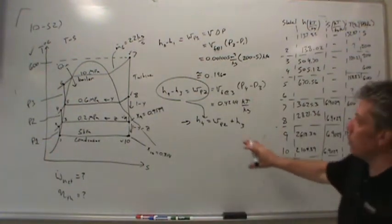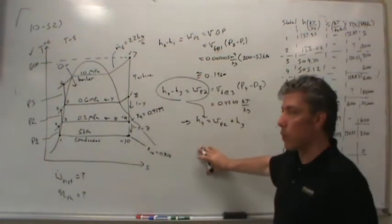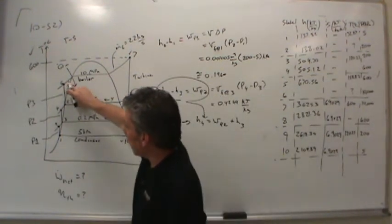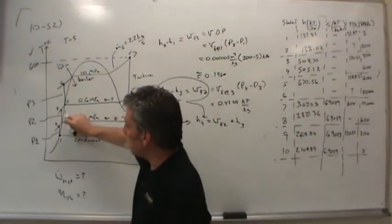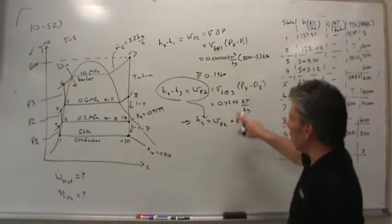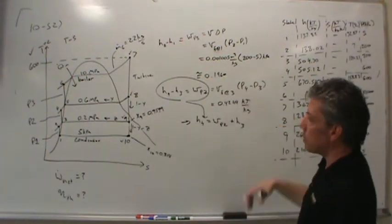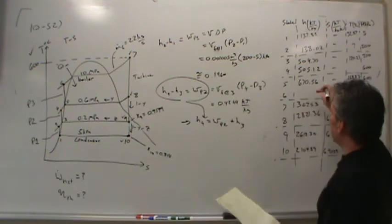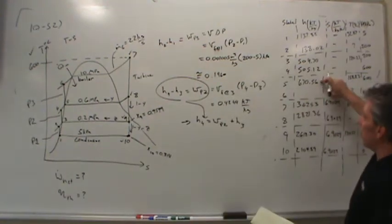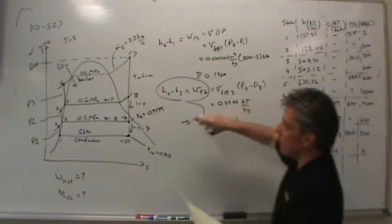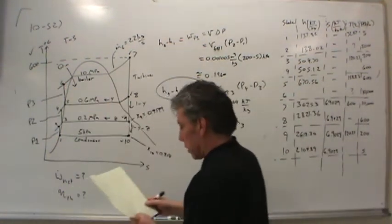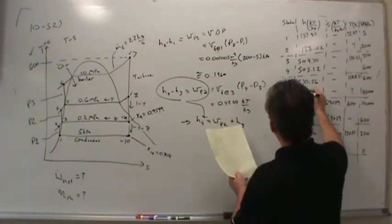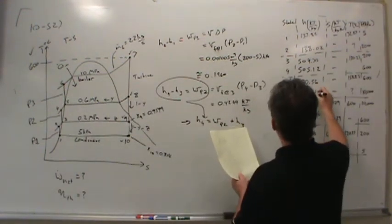I'll let you fill in the details for pump 3 — just follow this pattern, use state numbers 5 and 6 rather than 1, 2 or 3, 4. Make sure you know how to find the specific volume and understand your units. When you add that enthalpy change to the enthalpy at state 5, you'll get the enthalpy at state 6, which comes out to 680.91 or so kilojoules per kilogram.